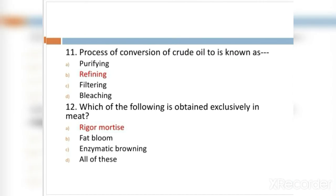MCQ 11: Process of converting crude oil is known as: Option A: purifying. Option B: refining. Option C: filtering. Option D: bleaching. The right answer is refining.